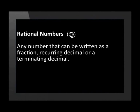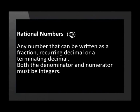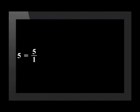A rational number is any number that can be written as a fraction, recurring decimal, or terminating decimal. Both the denominator and the numerator must be integers, and the denominator cannot be zero. Rational numbers can be negative, positive, or equal to zero. For example, five is a rational number because we can write it as a fraction where the numerator and denominator are integers. Two and a half is also rational — rewritten as an improper fraction, the numerator and denominator are both integers.